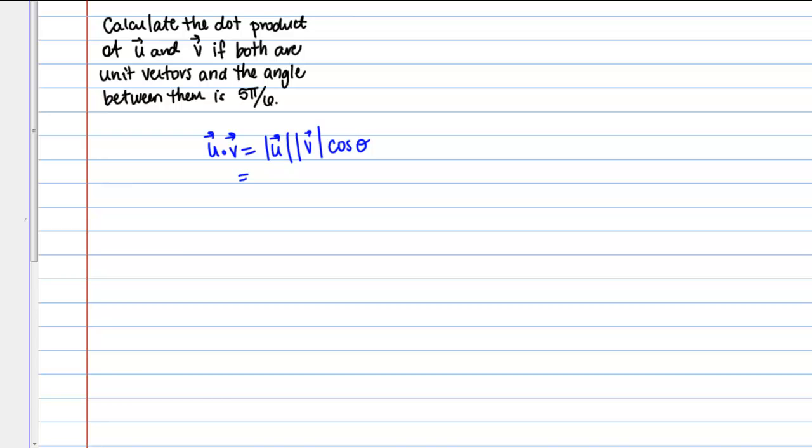In this case we're given all the information directly that we need to compute the dot product. We're told that U and V are both unit vectors and that means that their magnitudes are 1. The magnitude of U is 1 and the magnitude of V is 1 and we're told that the angle between them is 5π over 6. We have the cosine of 5π over 6.